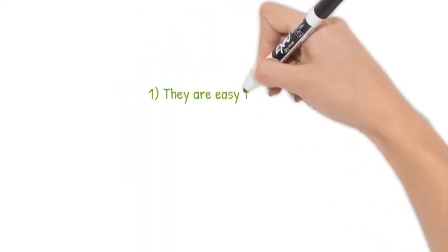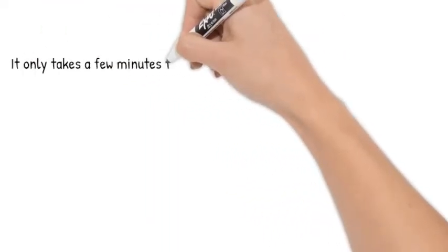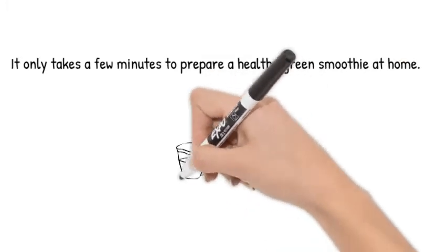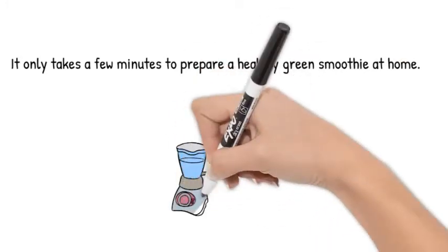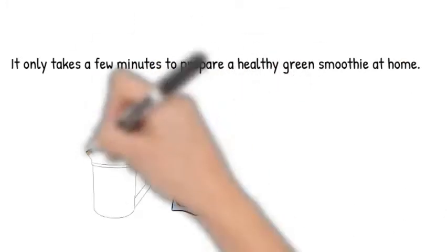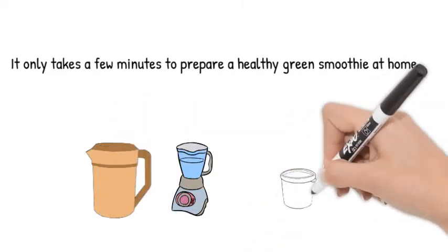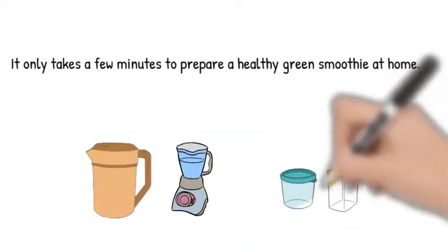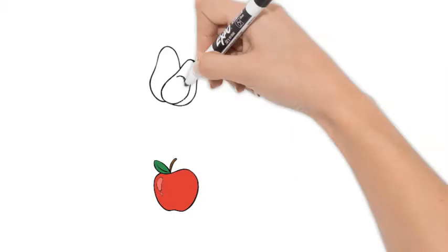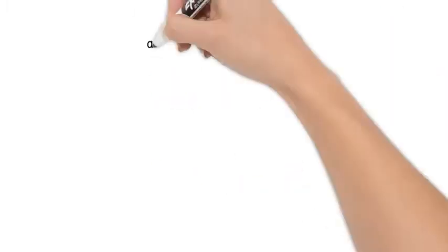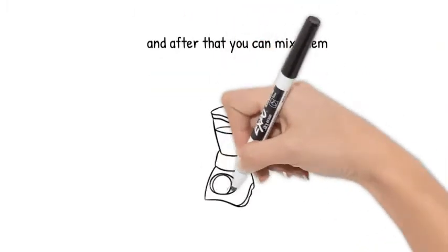They are easy to prepare. It only takes a few minutes to prepare a healthy green smoothie at home. As long as you have the equipment such as a blender, a pitcher, or any container, there is no reason you cannot make a healthy smoothie for yourself. All you have to do is select the kinds of veggies and fruits you like, and after that, you can mix them well with the use of a blender.